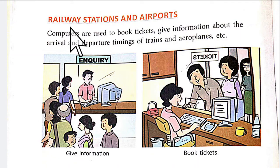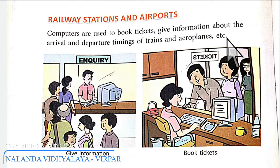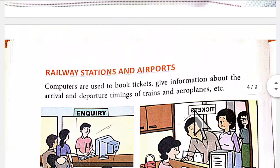Another area is the railway station and airport, where computers are also used. Computers are used to book tickets and to give information about the arrival and departure timings of trains and aeroplanes. If you need any train information — how many times the train is coming, what the timing is — all this information comes from the computer.